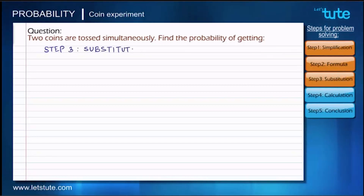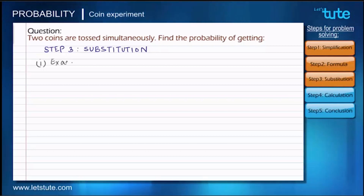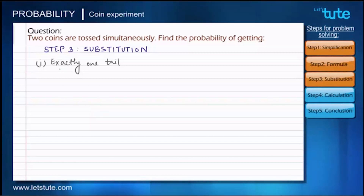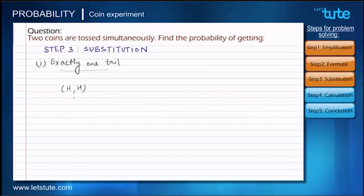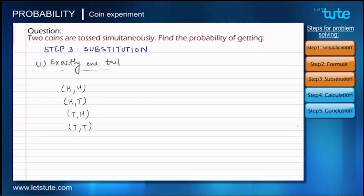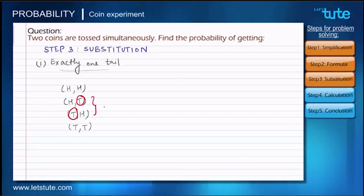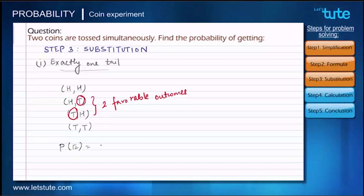Step 3 is the substitution step. For the first sub-question — probability of getting exactly one tail — we list down all four possible outcomes when tossing two coins. Out of these, we identify which outcomes have exactly one tail. We get exactly one tail in outcomes two and three, giving us two favorable outcomes. Substituting into the formula: 2 upon 4.